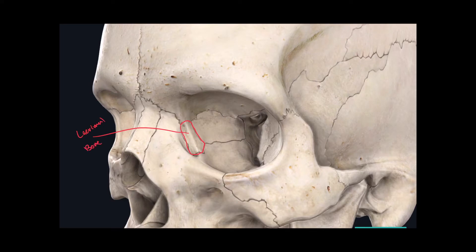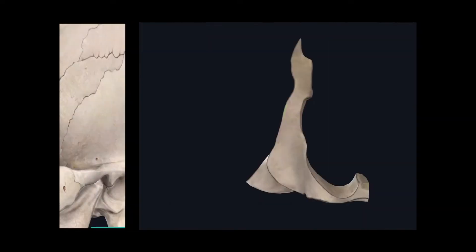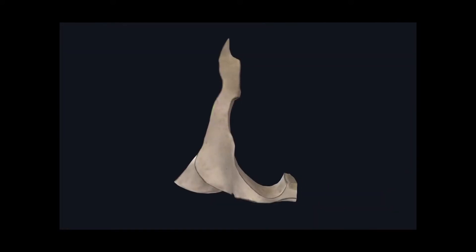Moving on to a bone that's very difficult to see from the external surface — the palatine bone. The palatine bone actually helps make up the bony palate. This bone is called the palatine bone and it's made up of two landmarks. The first one is this vertically oriented projection called the perpendicular plate of the palatine bone. And then we have this horizontally oriented landmark called the horizontal plate of the palatine bone.